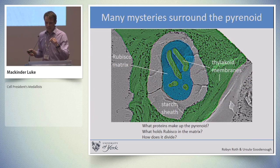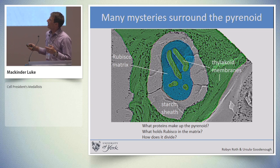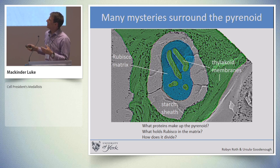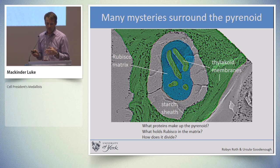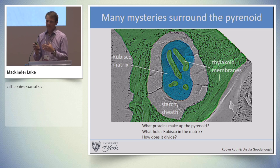However, until recently, our understanding of the pyrenoid was very limited. We had beautiful electron micrographs showing a large aggregation of rubisco with thylakoid membranes traversing through. However, we knew very little about the molecular components which made up the pyrenoid. So we had some key questions: what proteins make up the pyrenoid, what holds rubisco together in the matrix, and how does a pyrenoid divide?